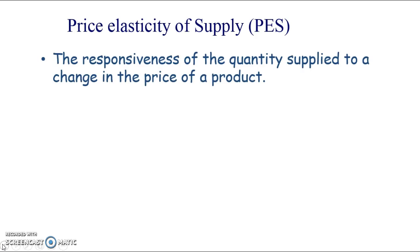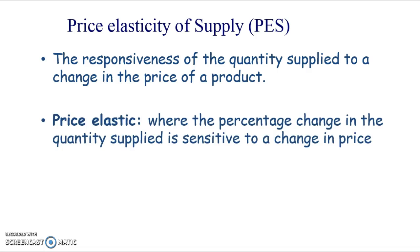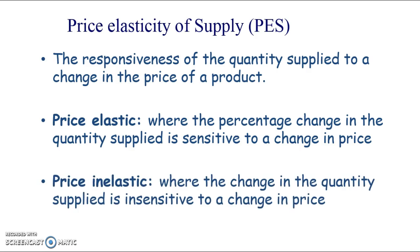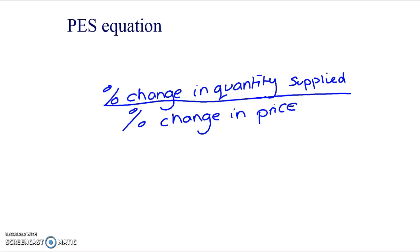Price elasticity of supply measures the responsiveness of quantity supplied to a change in the price of the product. When the price changes, how responsive is the quantity supplied? We can get an elastic figure where the percentage change in quantity supplied is sensitive to a change in price, or price inelastic where the change in quantity supplied is insensitive to a change in price. The equation is percentage change in quantity supplied over percentage change in price — price always being on the bottom.